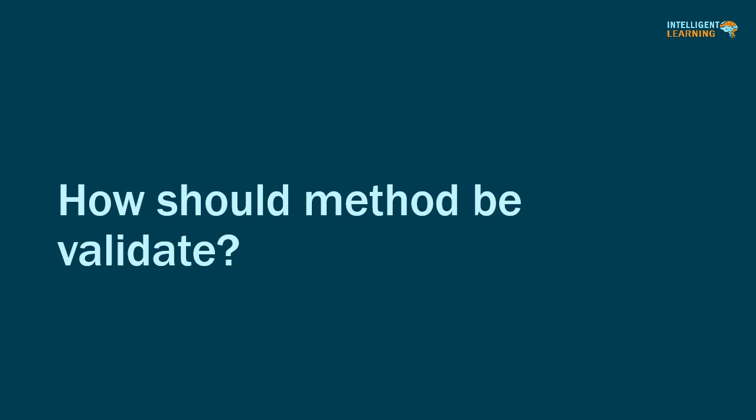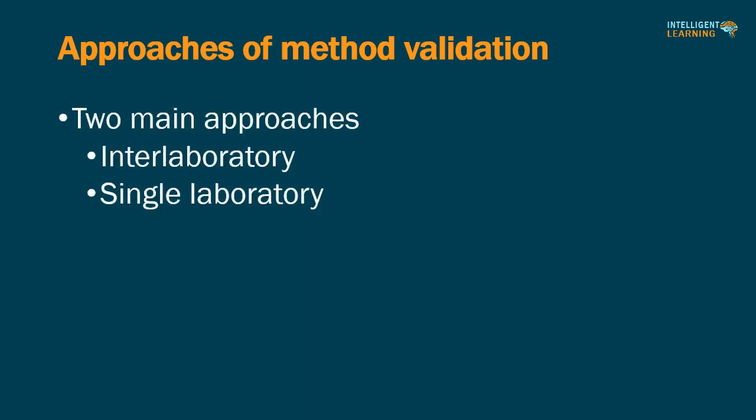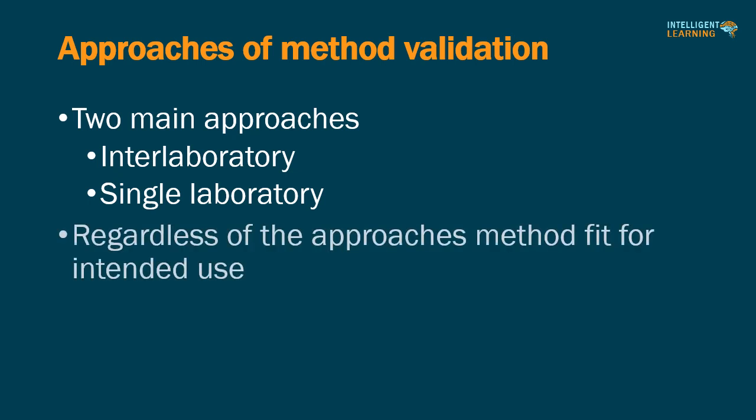How should a method be validated? Once the initial method development is finished, there are two main approaches to method validation: the interlaboratory comparison approach and the single laboratory approach. Regardless of the approach, it is the laboratory using the method which is responsible for ensuring that it is fit for the intended use.